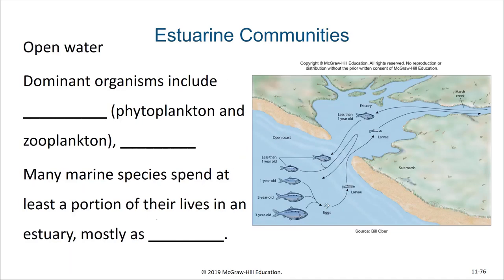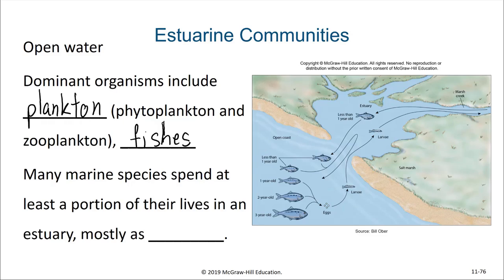A very important role of estuaries is that of a larval development ground — they are the nurseries for many marine species. When we look at contributions from the open water into an estuary, the dominant organisms include plankton, both phytoplankton and zooplankton, and also fishes. It turns out that many marine species spend at least a portion of their lives in estuaries, mostly as larvae. This speaks to estuaries' almost hidden importance to the survival of other marine communities as well.